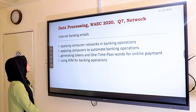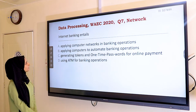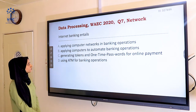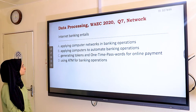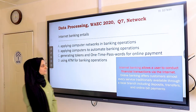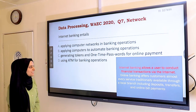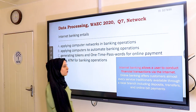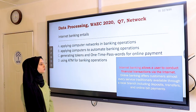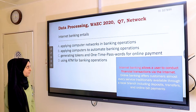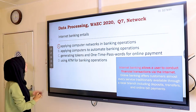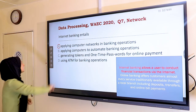Question seven: internet banking entails — A) applying computer networks in banking operations, B) applying computers to automate banking operations, C) generating tokens and one-time passwords for online payment, D) using ATM for banking operations. Internet banking allows users to conduct financial transactions via the internet, offering services like deposits, transfers, and online bill payments. The most relatable answer is A — applying computer networks in banking operations.